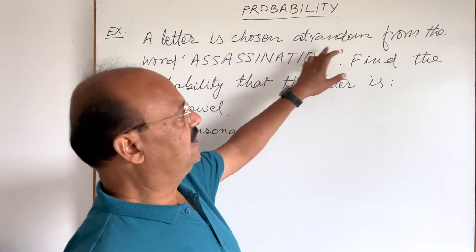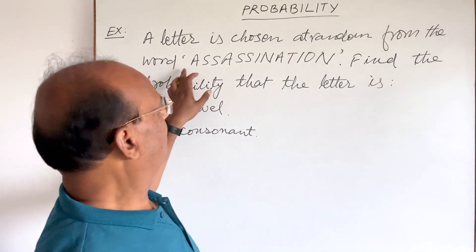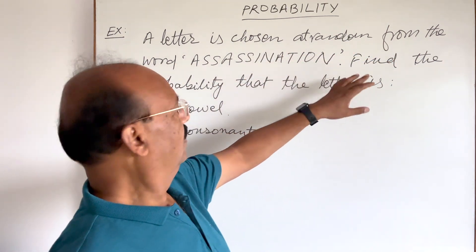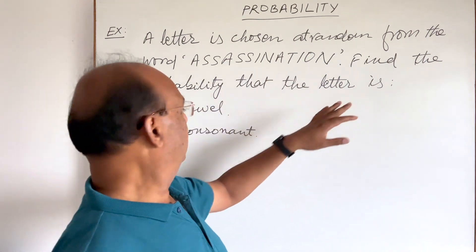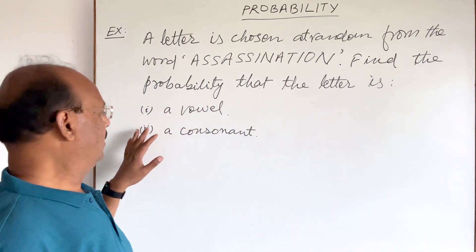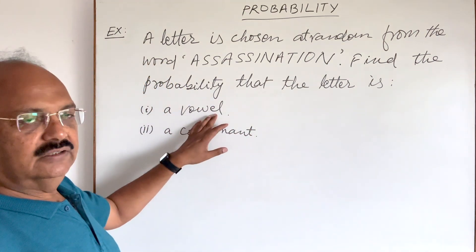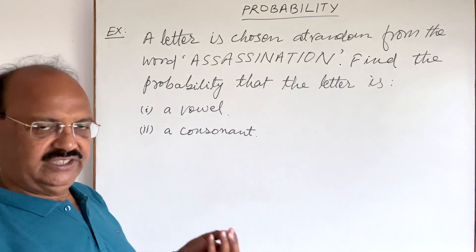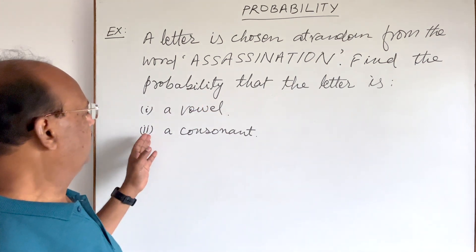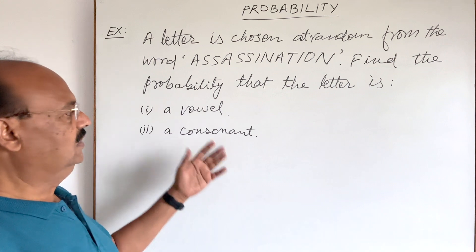Here the question is: a letter is chosen at random from the word assassination. Find the probability that the letter is - two parts of the question are here. First part, a vowel. What is the probability of choosing a letter which is a vowel? And what is the probability of choosing a consonant?